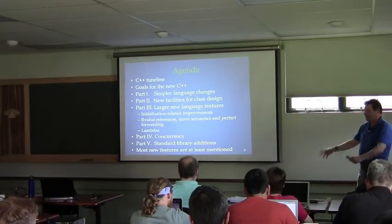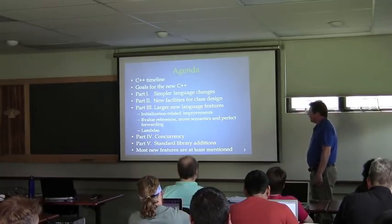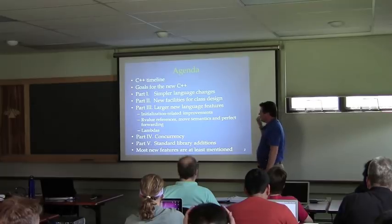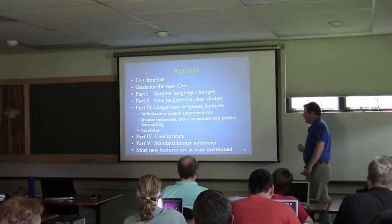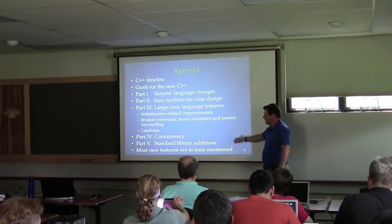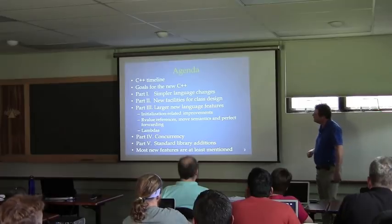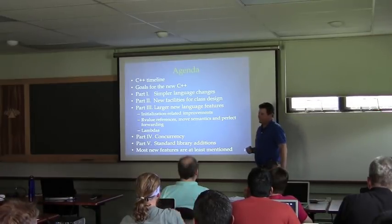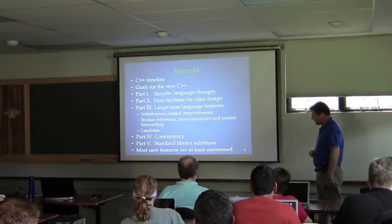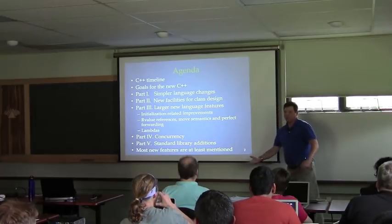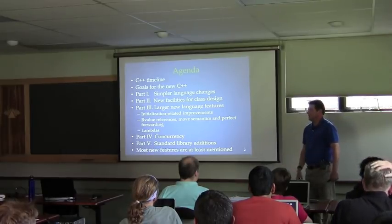We'll look at new facilities for class design, specifically focused on the relationships between classes. Then we'll look at some of the larger features: initialization-related stuff, uniform initialization, prevention of truncation, and so forth. Move semantics, which really covers R-value references, move semantics itself, and perfect forwarding. And lambdas — each of those is a fairly elaborate piece of the language and deserves extra time. Of course, concurrency — some of you probably attended the concurrency talk this morning, so that's already getting into the nitty-gritty.